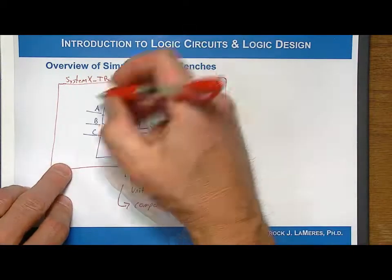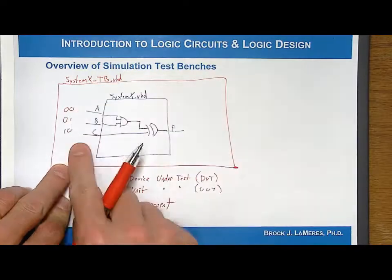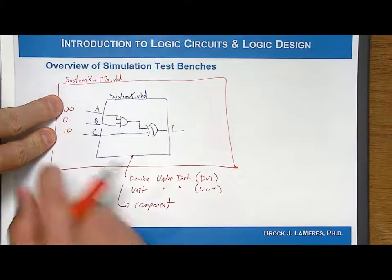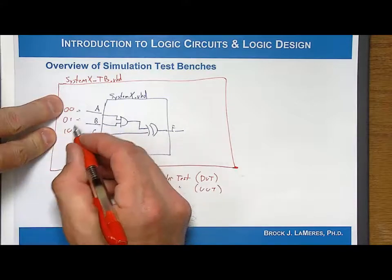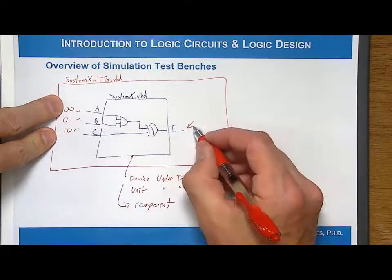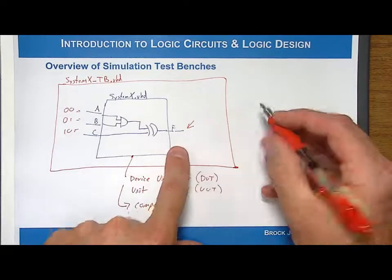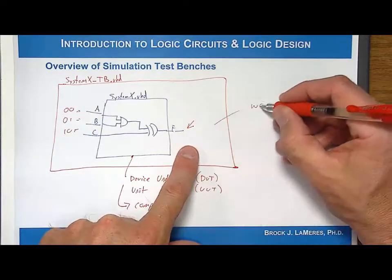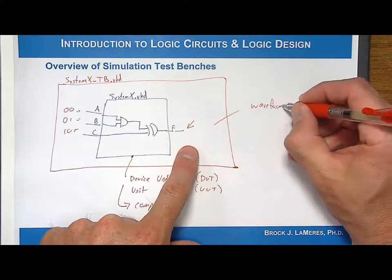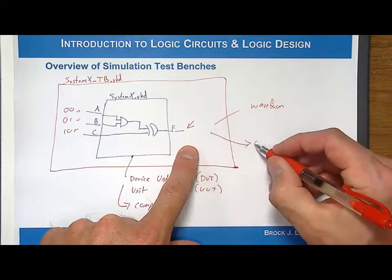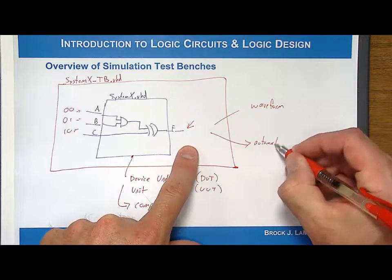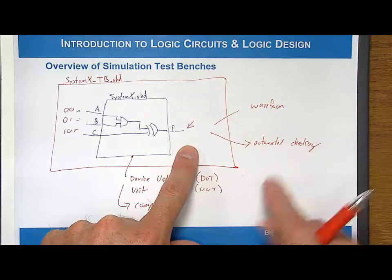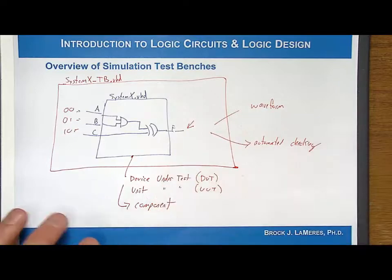And then what we do is we drive in 0's and 1's into this using modeling capabilities within VHDL. And then what we do is we can observe over here the outputs. And you can observe the outputs using a couple different techniques. You can observe them using a waveform viewer within the CAD tool itself, or you can actually do some sort of automated checking. And we're not really going to go into any of the capabilities of a test bench. I just want to give you an overview of kind of how this works.